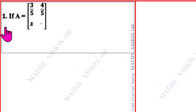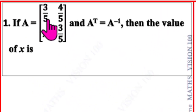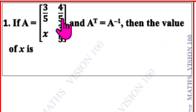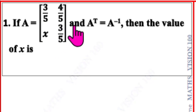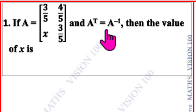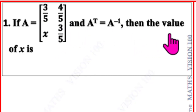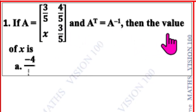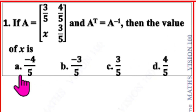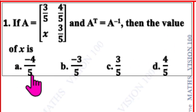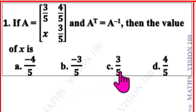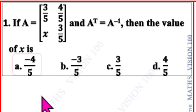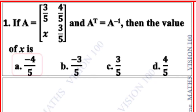Question number 1. If A is equal to the matrix [3/5, 4/5; x, 3/5] and A transpose equal to A inverse, then the value of x is: A) minus 4/5, B) minus 3/5, C) 3/5, D) 4/5. The correct option is A: minus 4/5.